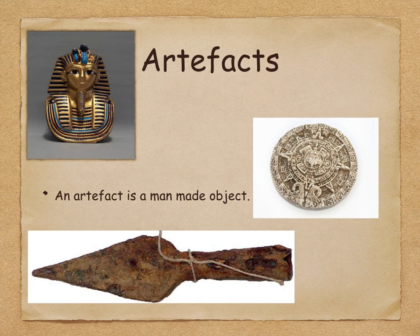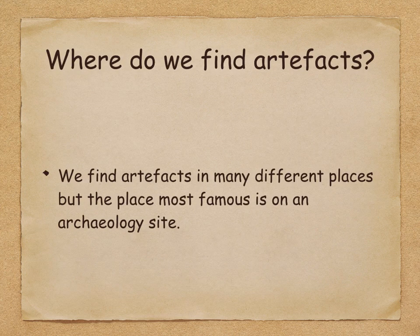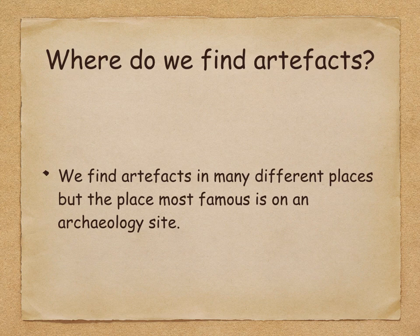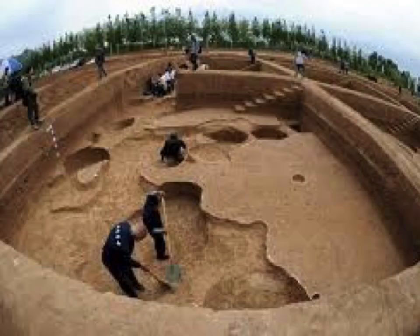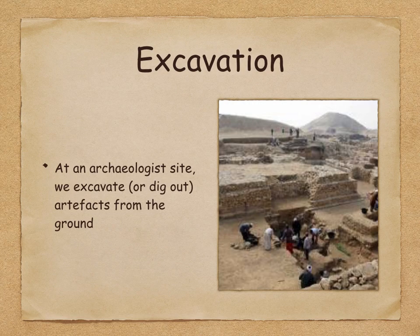Artifacts are found in many different places, but the place most famous and most associated with archaeologists is an excavation site. Here's a picture of what an archaeology or excavation site might look like — lots of people excavating and using a variety of tools, which we'll look at in a later video. To excavate means to dig out artifacts from the ground at an archaeological site.